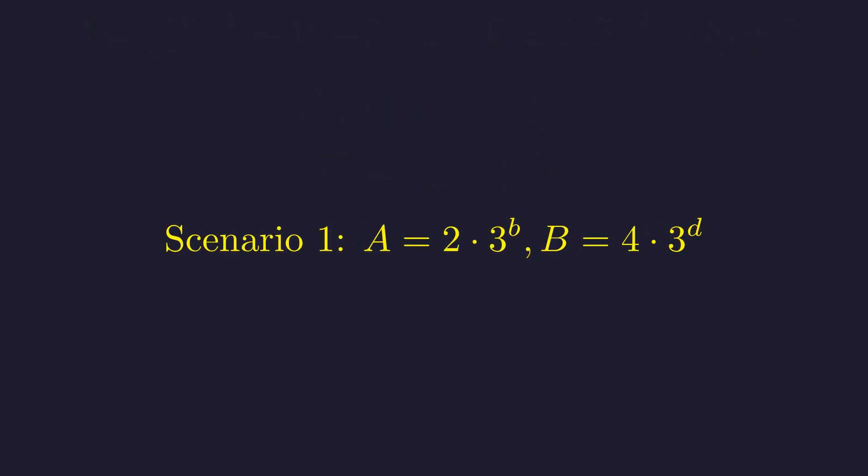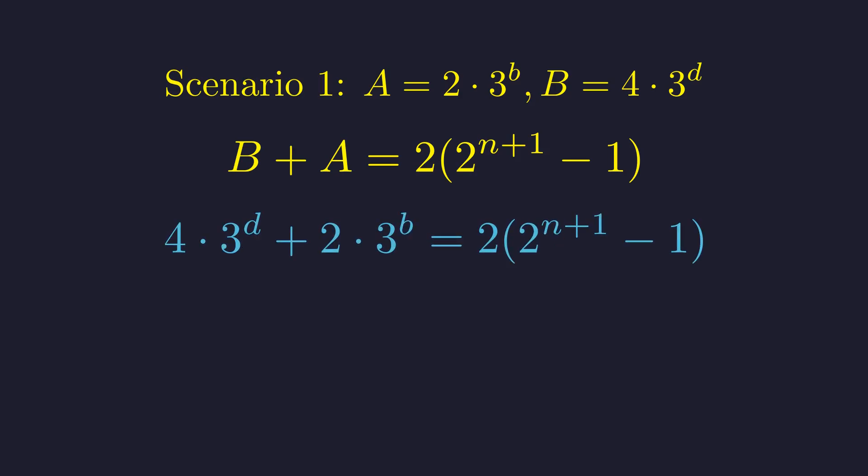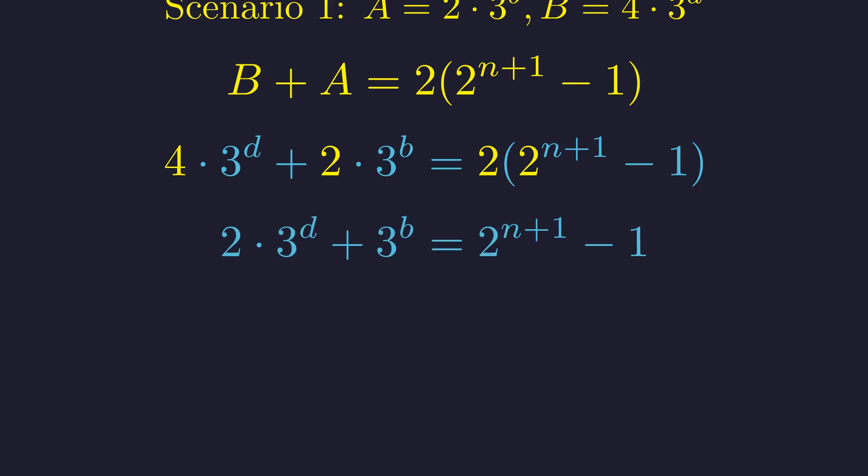In the first scenario, we set a equal to 1 and c equal to 2. By definition, b is the larger factor. By summing a and b, we can establish a direct relationship with the variable n. We substitute the forms of a and b for this scenario into the sum equation. Each term in this equation is divisible by 2. Therefore, we can simplify it by dividing through by 2. This simplification results in an exponential Diophantine equation relating b, d, and n, where n equals b plus d.